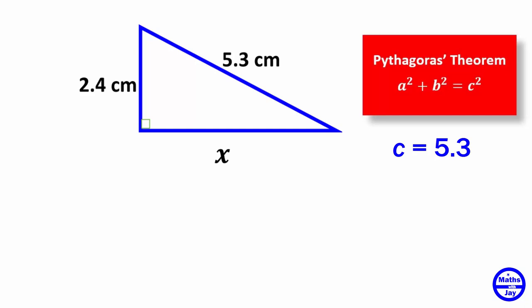So the theorem tells us that the sum of the squares of the short sides is the square of the hypotenuse. So we have, let's take x as a, so x squared, and then b will be 2.4, x squared plus 2.4 squared.